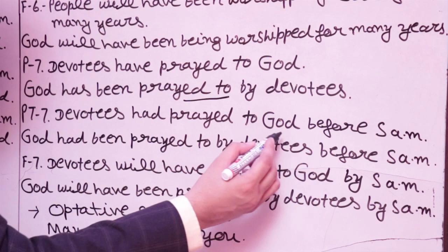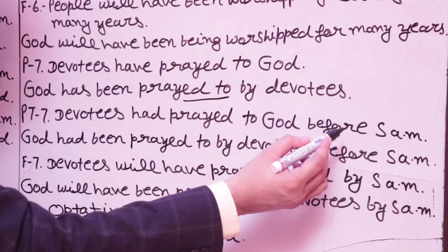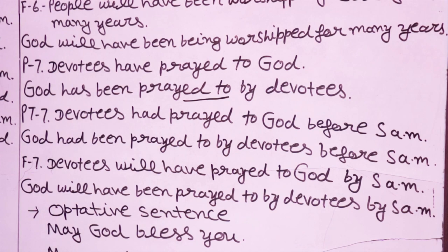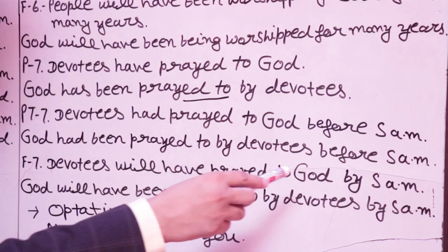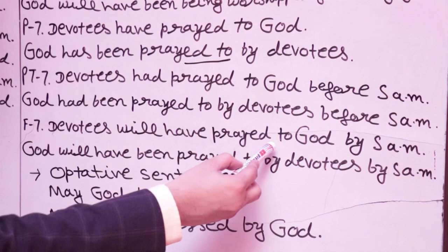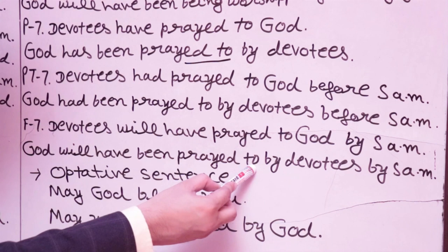PT7 — past perfect: 'Devotees had prayed to God before 5 AM' → 'God had been prayed to by devotees before 5 AM.' F7 — future perfect: 'Devotees will have prayed to God by 5 AM' → 'God will have been prayed to by devotees by 5 AM.' The meaning remains the same in all cases.